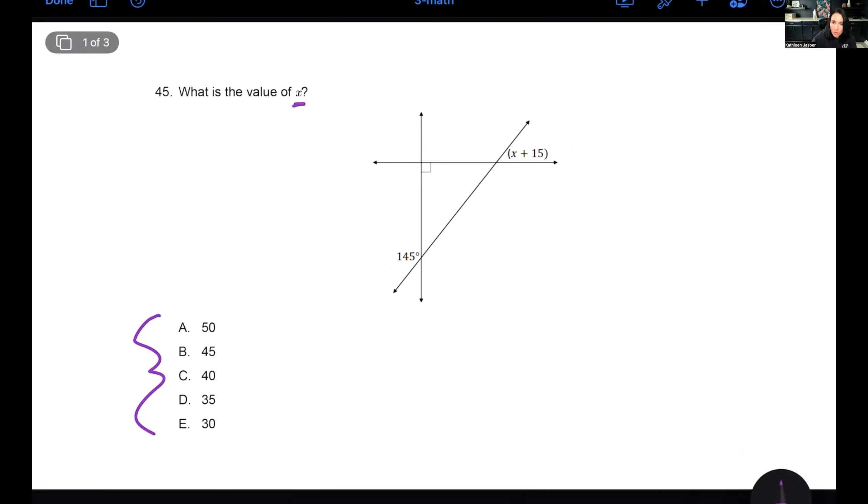I say that because sometimes you can eliminate certain answer choices. But in this case, I make it hard on you. I have a 15 up here and I have a 145 here, which leads me to believe that the end result is probably going to be multiples of five.